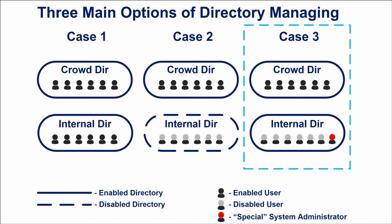The third and best option is to leave the internal directory enabled but with only one user — the special system administrator. However, it can be difficult to remove other users from the internal directory in older Confluence versions. The ability to delete users who have created content appeared only in Confluence 6.13. Note that you can work with the internal directory only when it is first on the list.